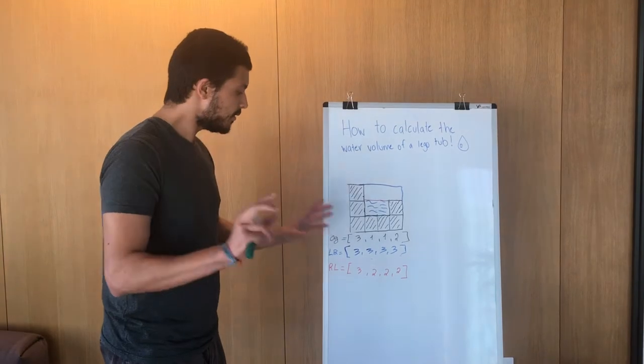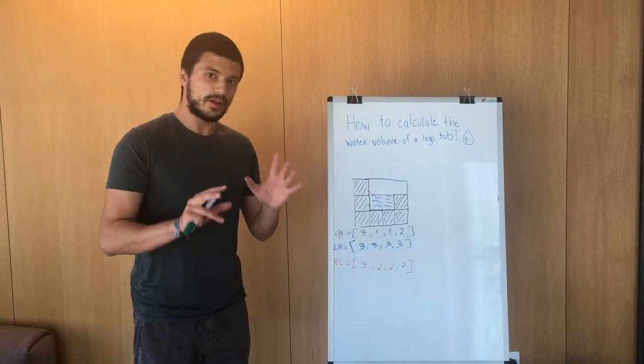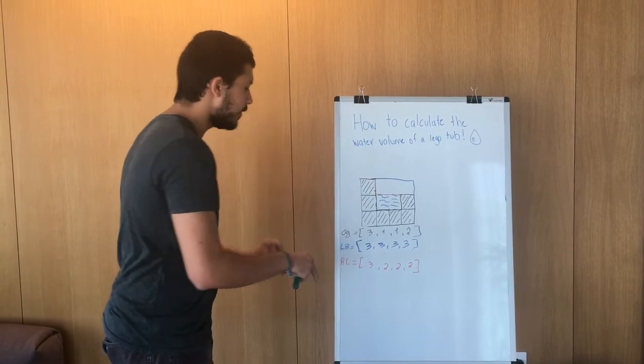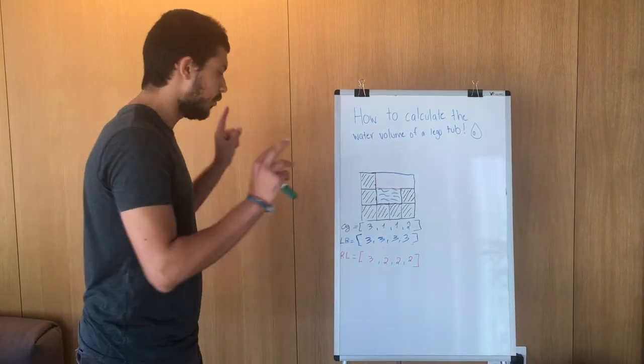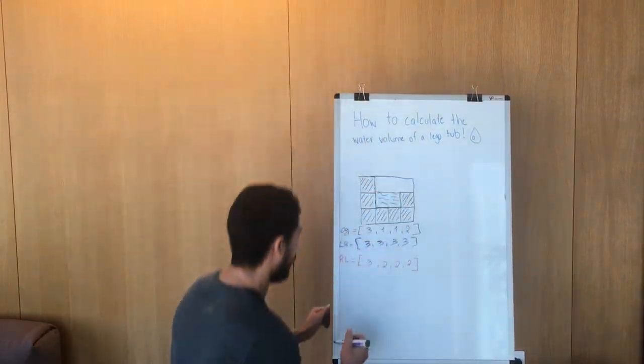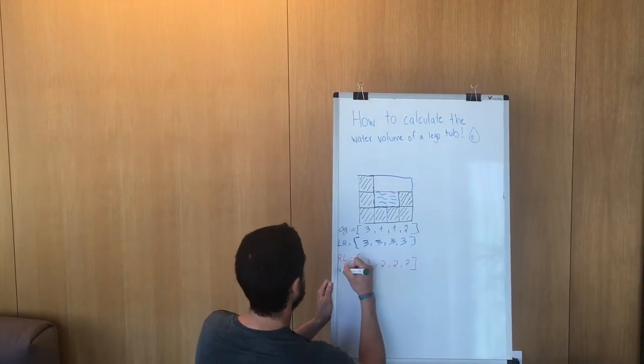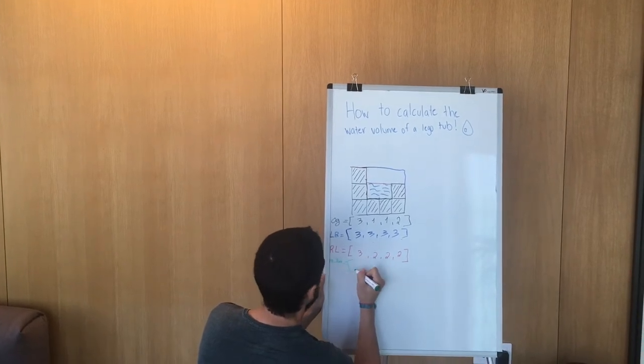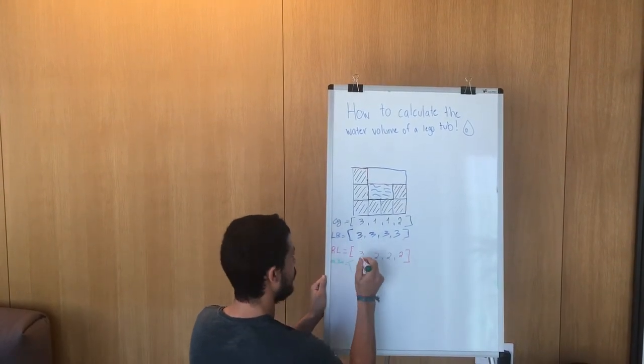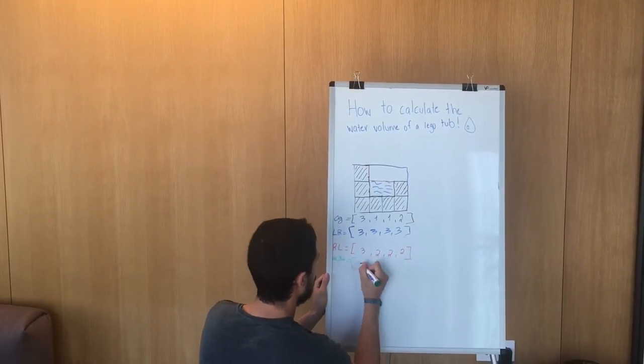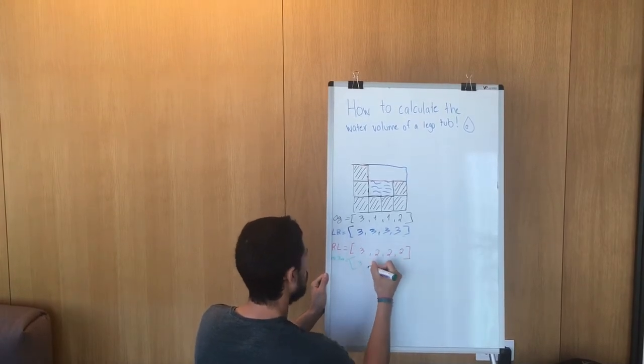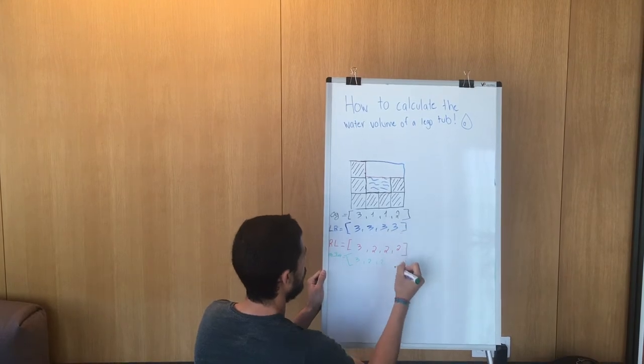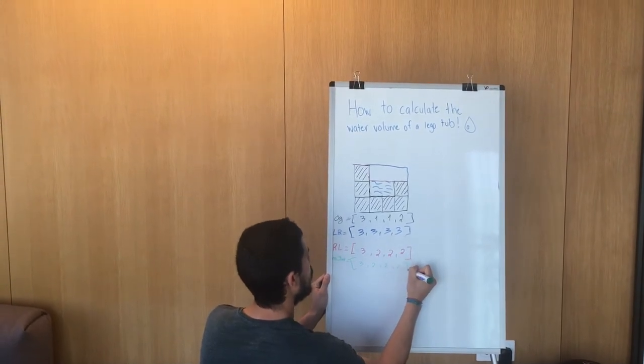Our next step now is we're going to calculate the minimum of these 2 newly created arrays per element. What is this? It's very simple. You just call a new one, call min 2, and which one is the minimum of these 2? It's the same so it's going to be 3. Which is the minimum of this? It's 2. Which is the minimum of this? It's 2. Which is the minimum of this? It's 2.